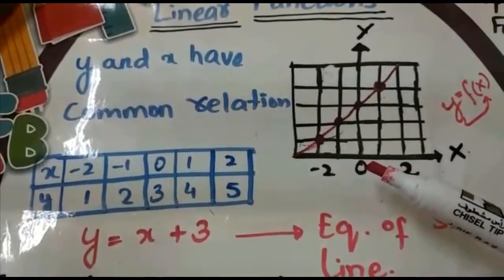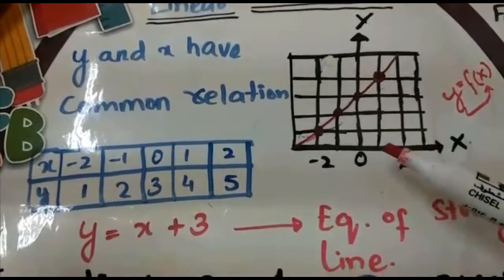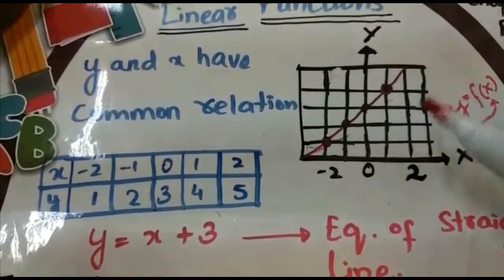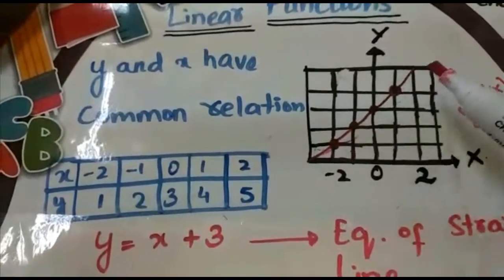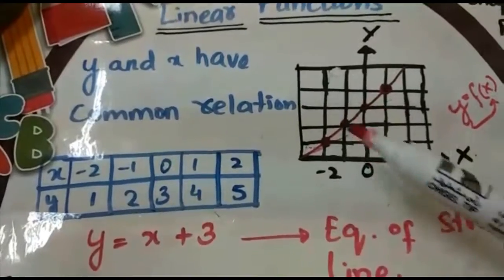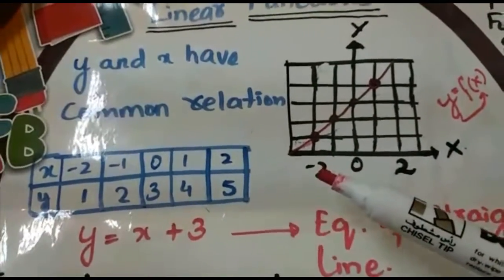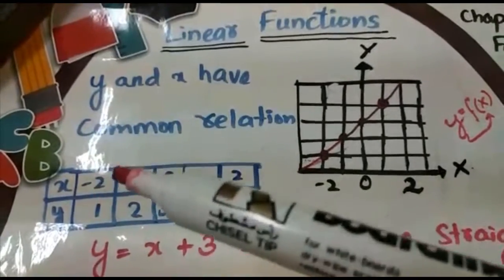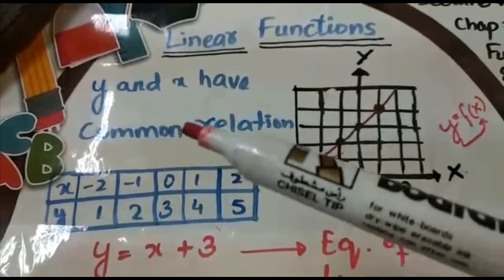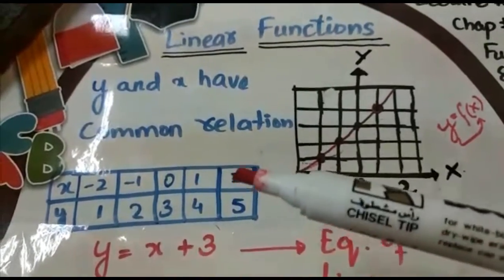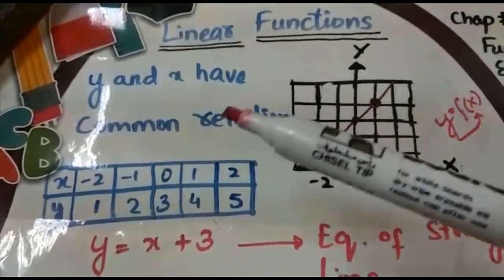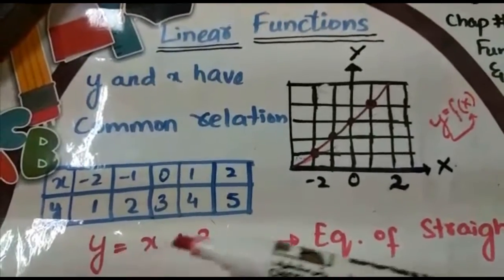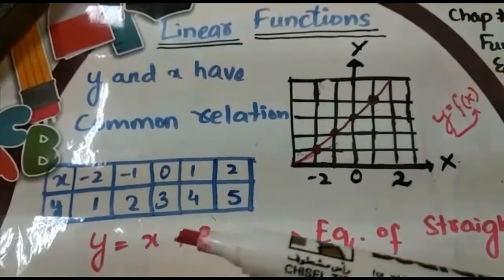Now look at this point: at x = 0 we have y = 3; at x = 1, y = 4; at x = 2, y = 5. So if we are going to make the relationship between x and y, look at x = -2 and y = 1 — there is a difference of three numbers ahead.